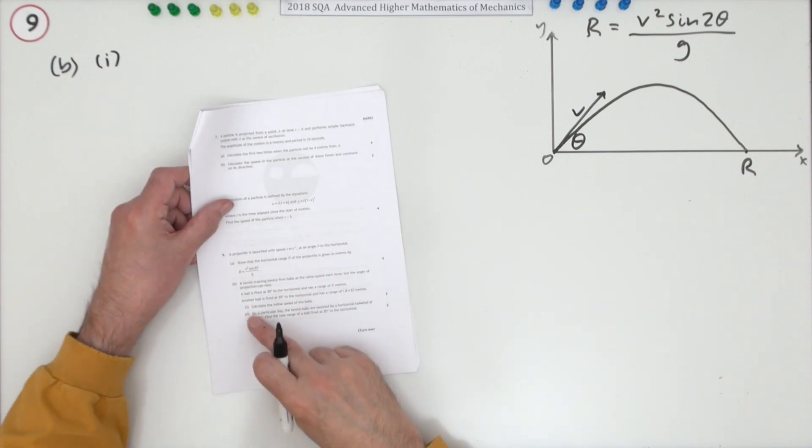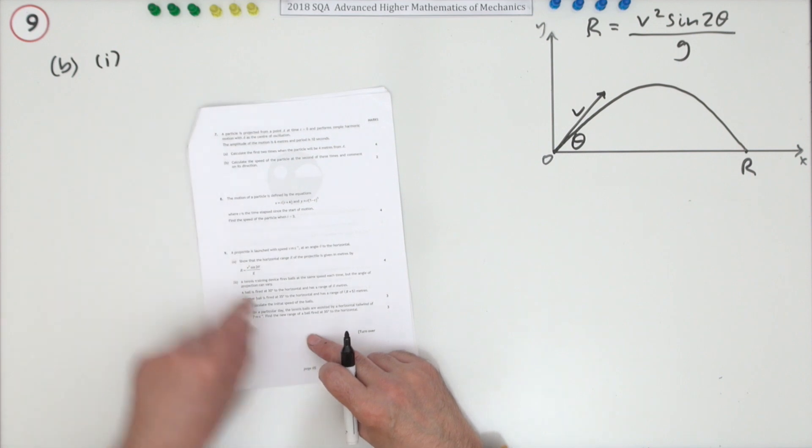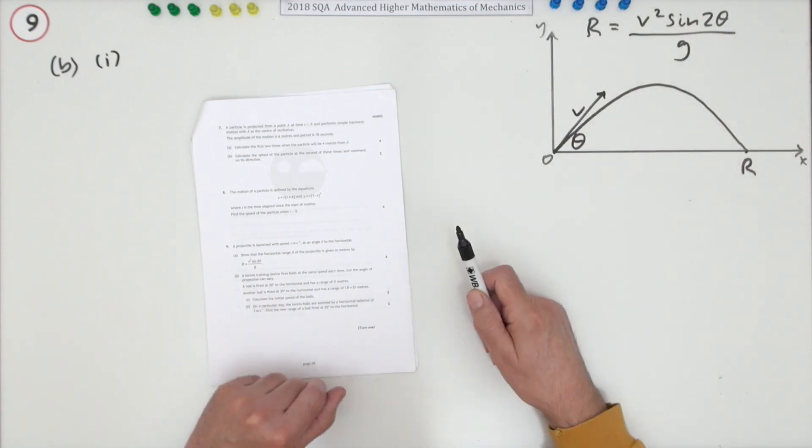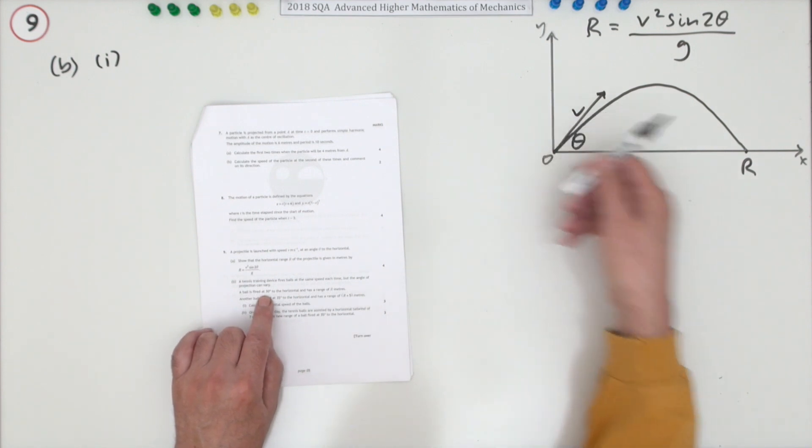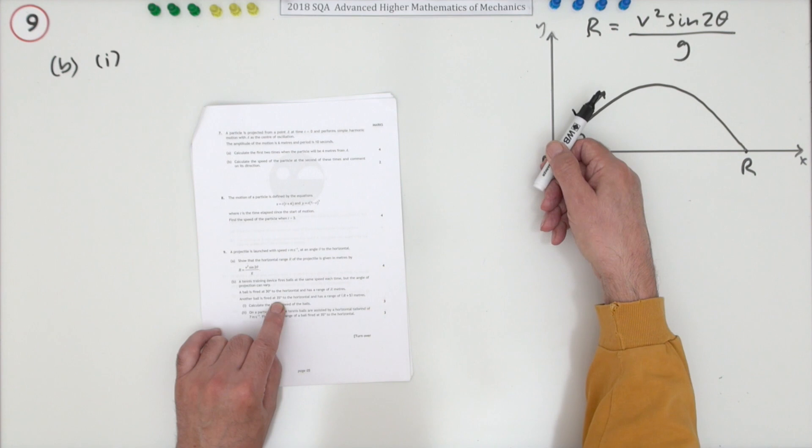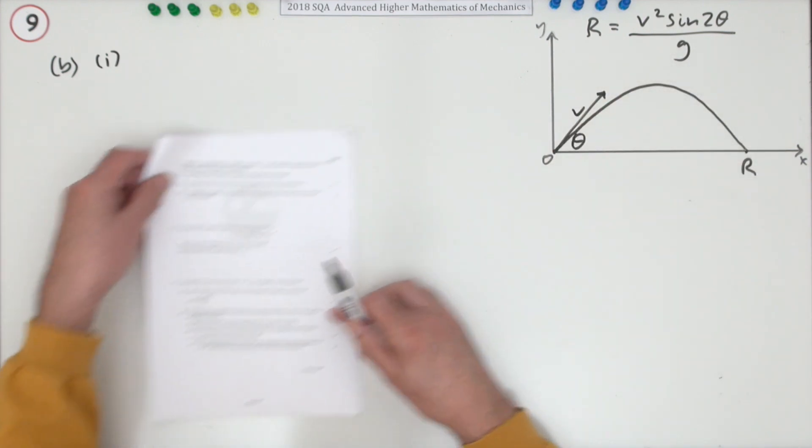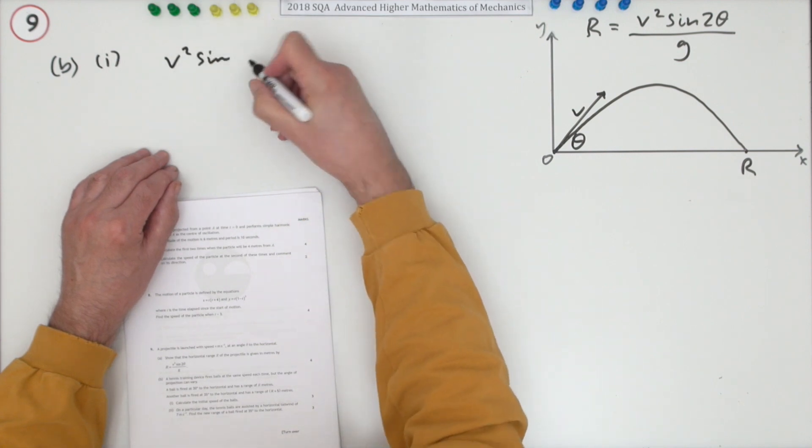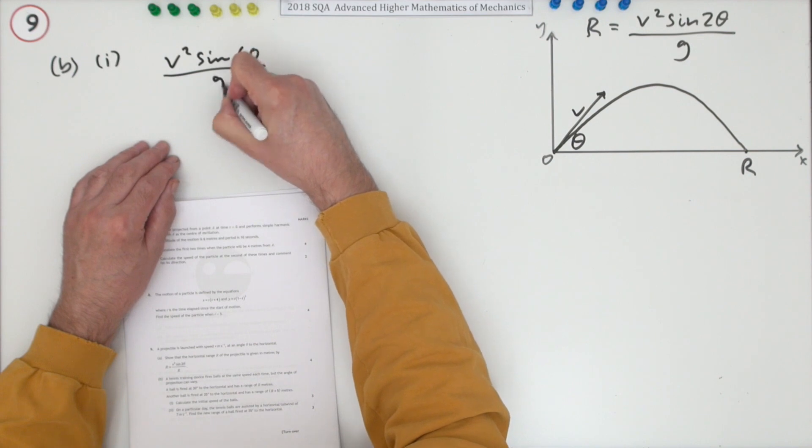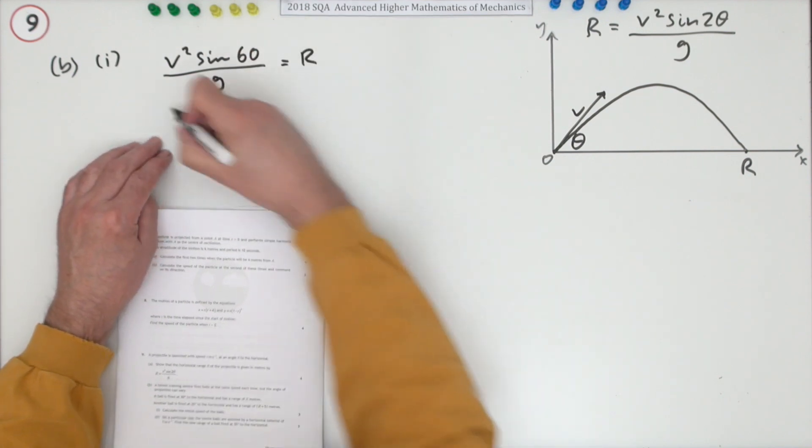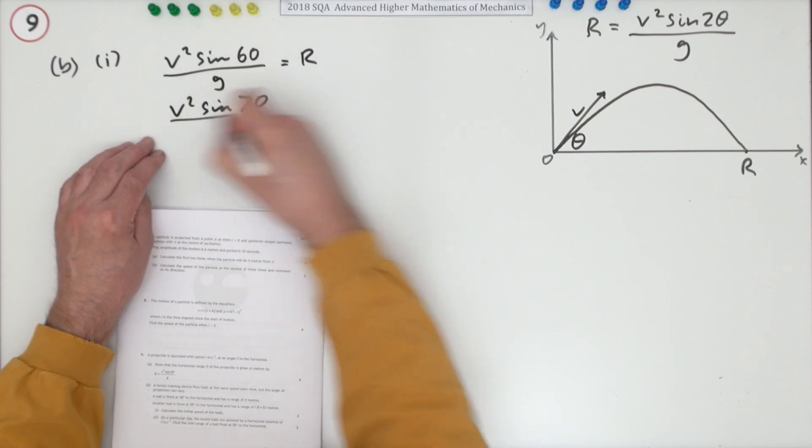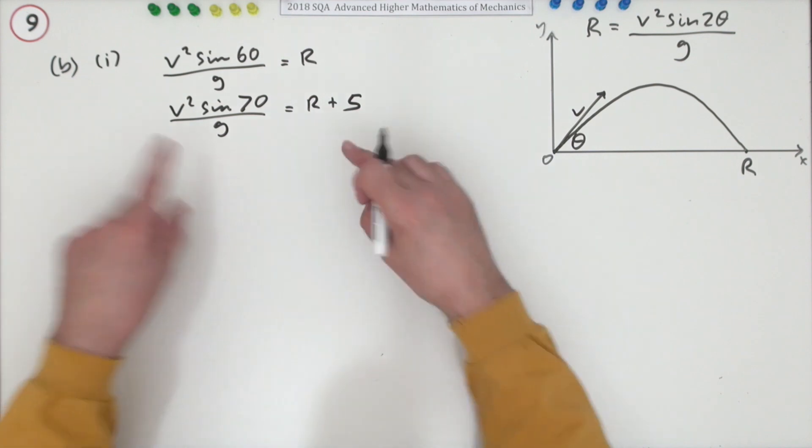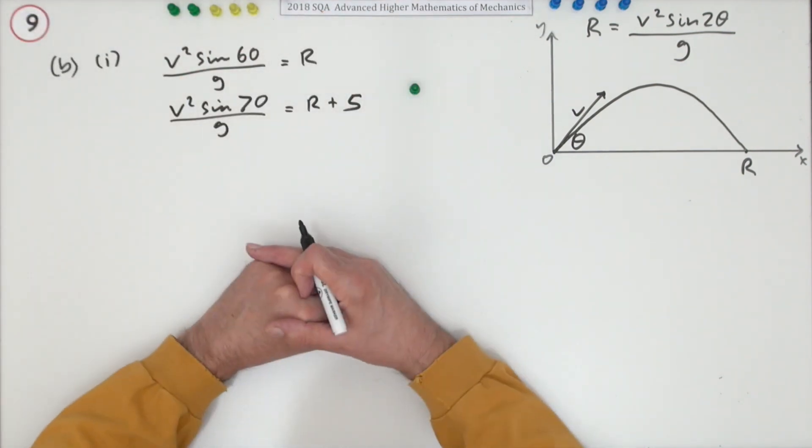Part b, it's in two parts, part b part one for three marks. A tennis training device fires balls at the same speed each time, but the angle of projection can vary. So it's still this situation here and it says this now: a ball fired at 30 degrees has got a range r, a ball fired at 35 degrees has got slightly longer range, range of r plus five. We just put those two things down. So what have you got? So at 30 degrees, so v squared sin, and if it's at 30 degrees, double it will be 60, divided by g, that equals r. And the other one is, if it's fired at 35, so double it will be 70, that'll be r plus five. Well you've got a pair of simultaneous equations there then.